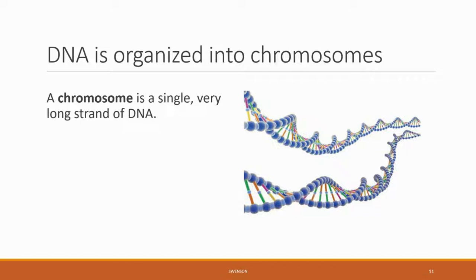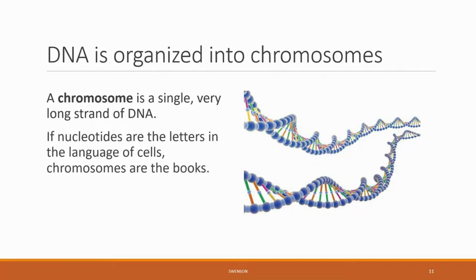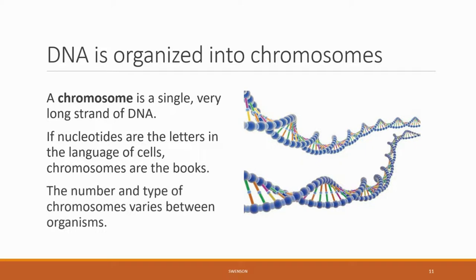The structural organization of DNA is an important component to cellular replication. You've heard your DNA discussed in terms of your chromosomes. A chromosome is a single long double strand of DNA. In the analogy of the letters of the code representing language, chromosomes would be the books of the cell. The number and types of chromosomes will vary between different organisms, and the collection could be thought of as a library.